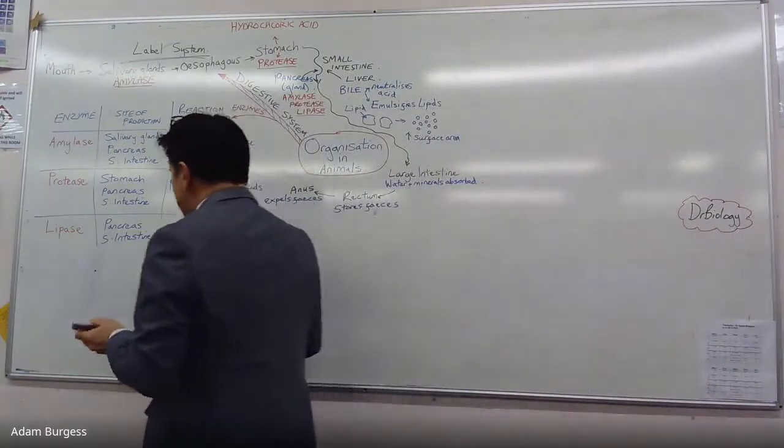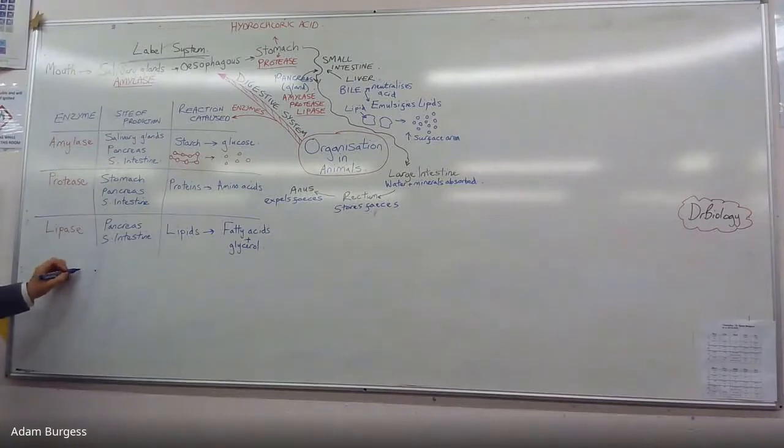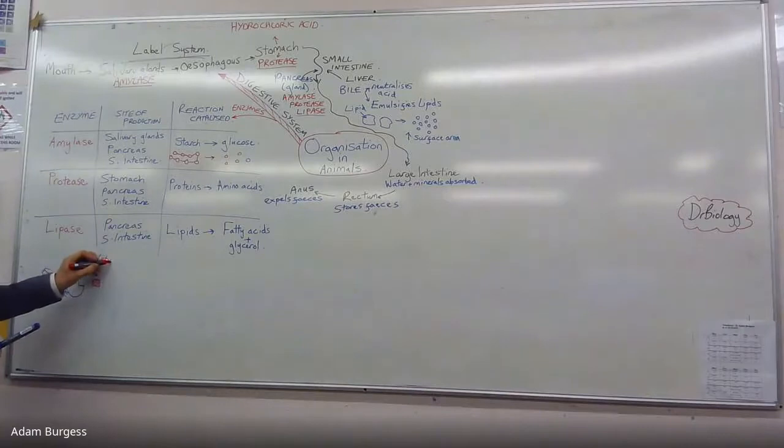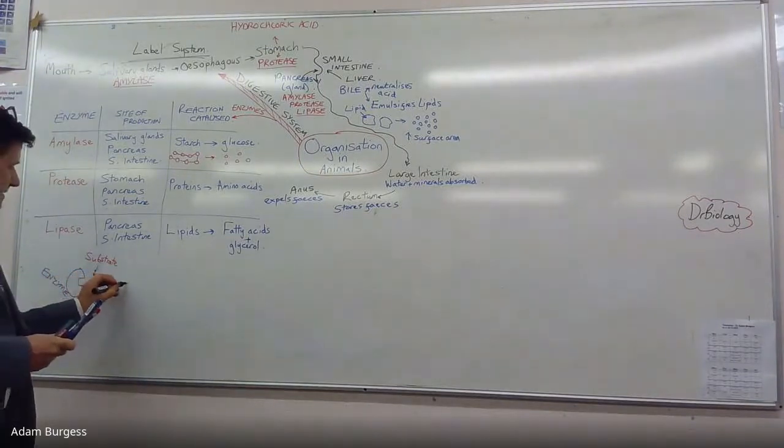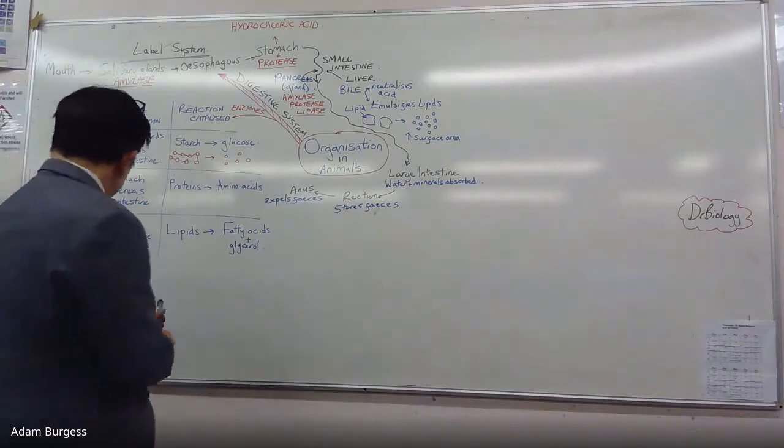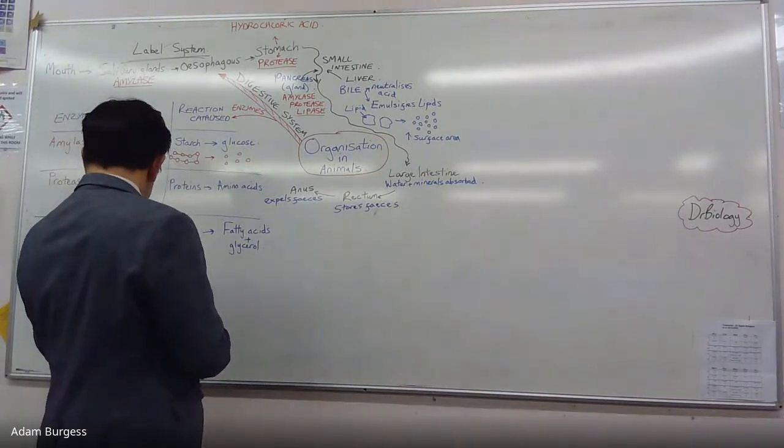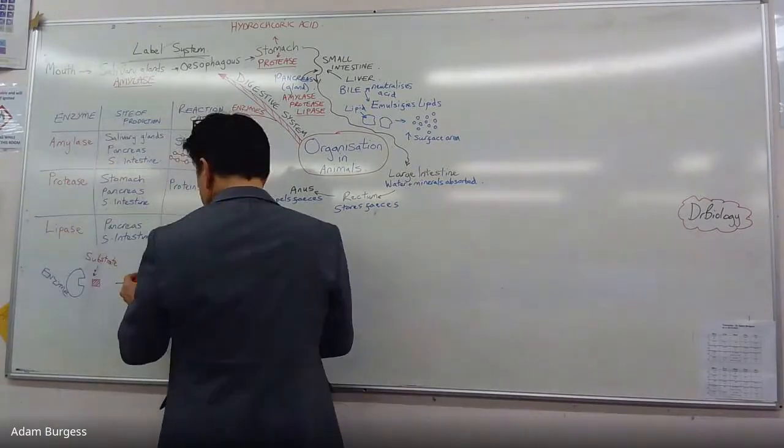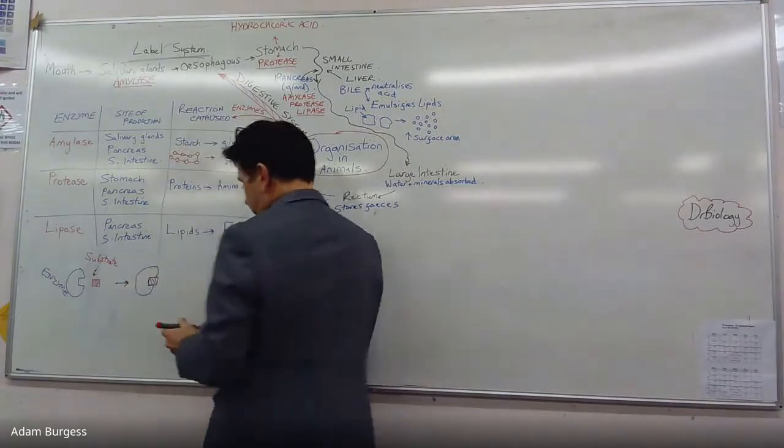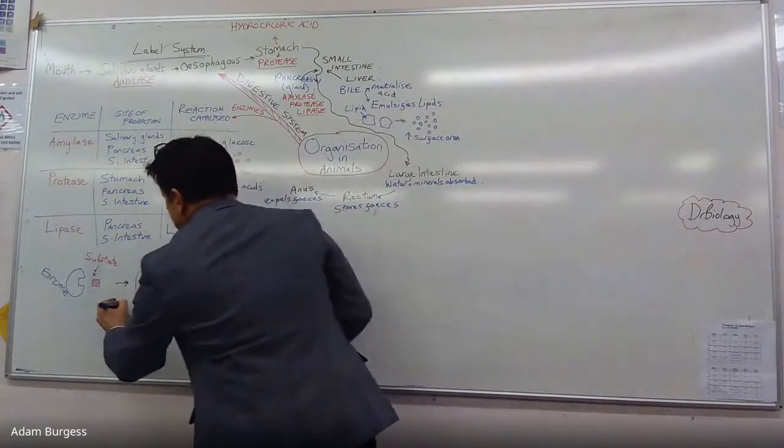In terms of how enzymes work, very briefly. Here's the enzyme, and you have a substrate. Can anyone remember what the theory is? The Lock and Key theory. What happens is the enzyme and substrate collide. It forms what we call an enzyme-substrate complex.